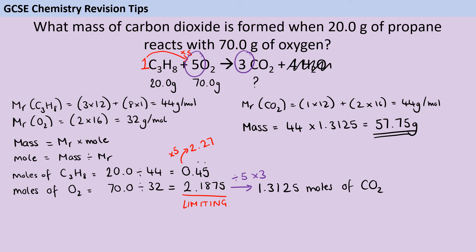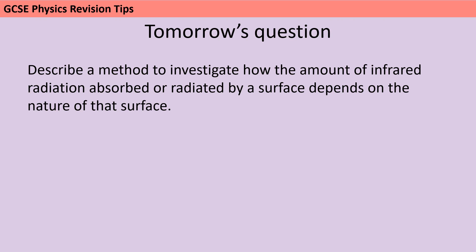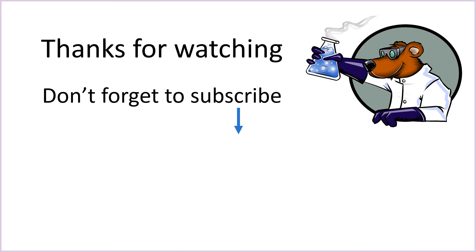Then a second mark for working out the moles of propane, a third mark for working out the moles of oxygen, a fourth mark for identifying that the oxygen is the limiting reactant, a fifth mark for using the coefficients to work out the moles of carbon dioxide, and your final mark for working out that final mass. Thank you very much for watching and I hope that by now you are feeling really prepared for your GCSE exams. If you have found this useful then don't forget to like and subscribe for more GCSE science revision videos coming soon.